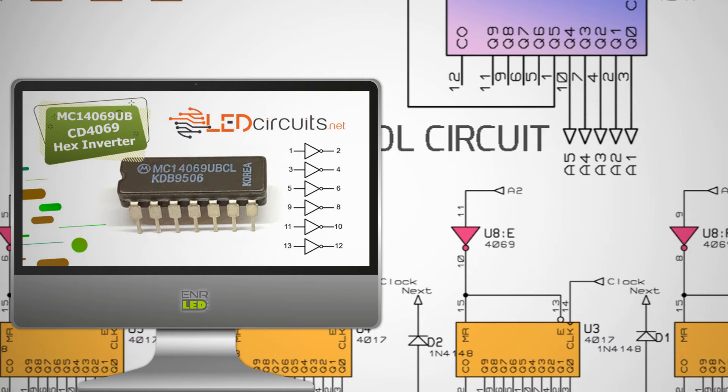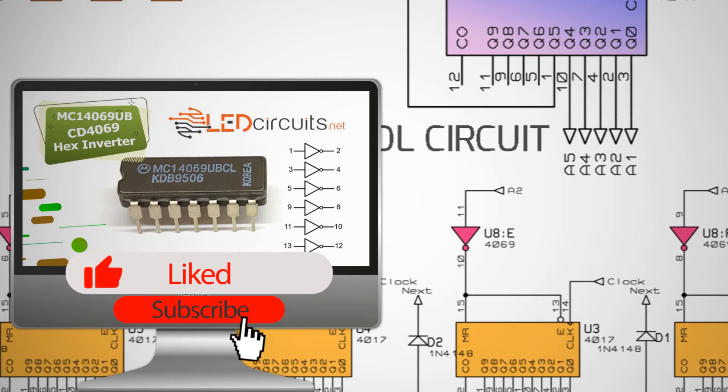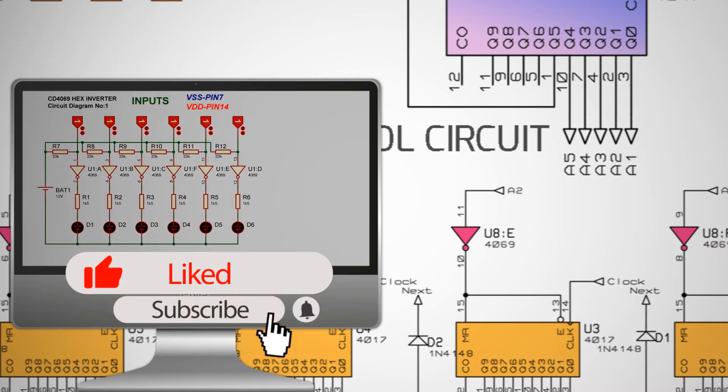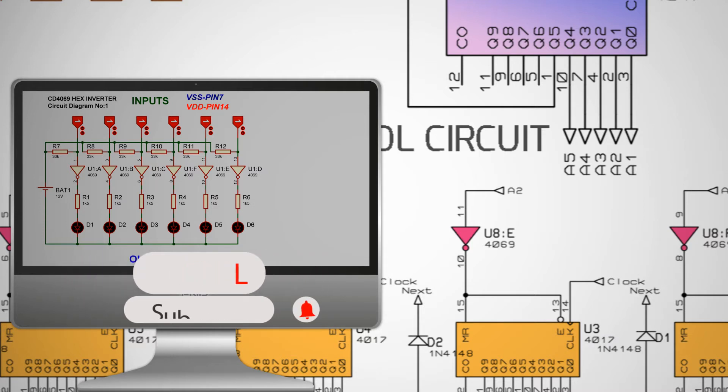We have another integrated circuit next. CD4069 is a hex inverter. The 4069 IC, which is very simple to use, transfers the logic level applied to its input and reverse to its output. For example, if the input is connected to logic 1 level, logic 0 levels are taken from the output. Conversely, when the input is logic 0, the output becomes logic 1.